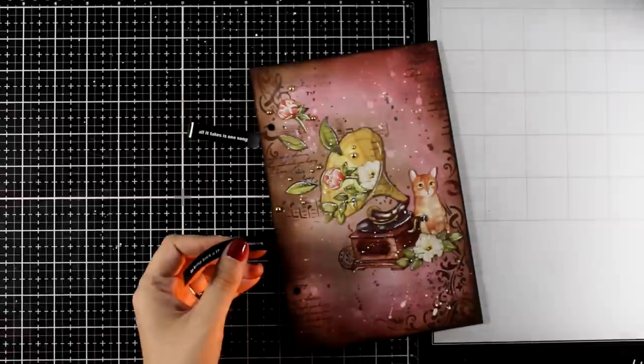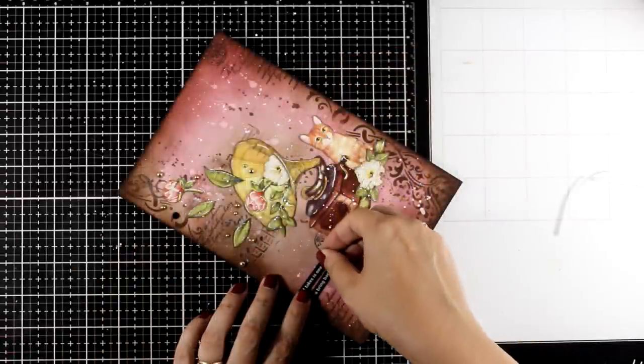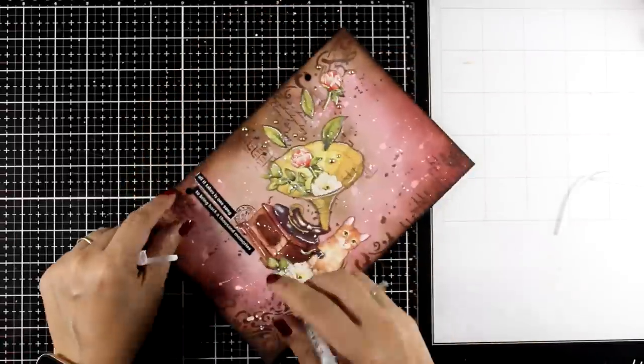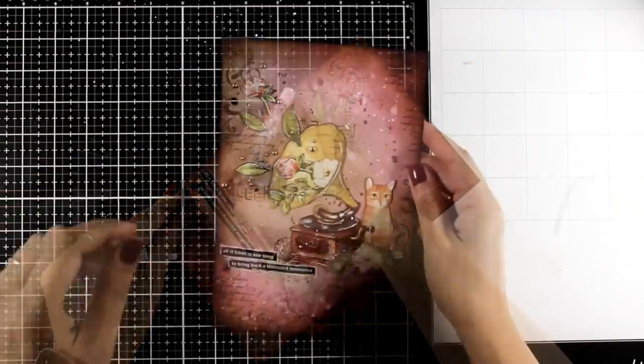And these are really easy to peel off. I'm going to place them down, and then with my white gel pen I'm just going to outline them and I'm going to call this page done.